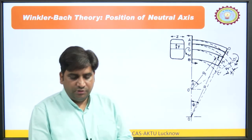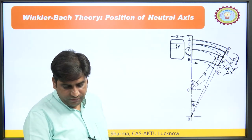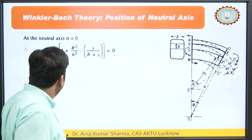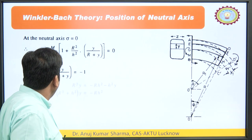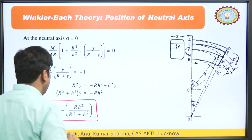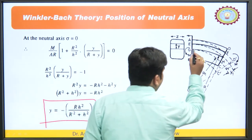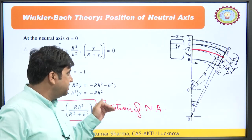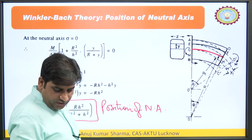For the position of the neutral axis, we know that at the neutral axis the bending stress σ = 0. Setting σ = 0 in the formula gives: (R²/h²) · y/(R + y) = −1, and on simplification we obtain the position y of the neutral axis measured from the centroidal axis. In curved beams, the neutral axis and the centroidal axis do not coincide — the neutral axis is shifted slightly from the centroidal axis.